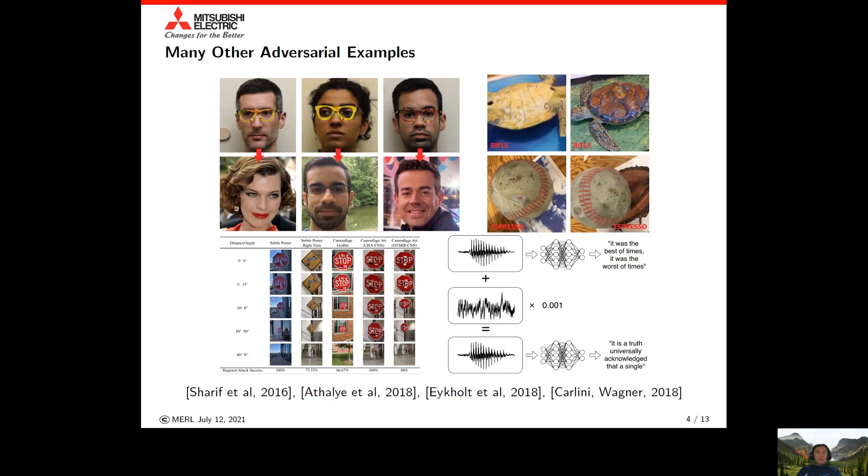In the literature, there have been many other examples of adversarial attacks. For example, people have demonstrated adding funny-looking glasses that cause face recognition software to misdetect people. People have even constructed 3D-printed objects that are misclassified, and constructed road signs with subtle alterations that fool road sign classification networks.